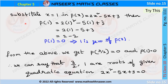Now we substitute x equal to 1 in p of x equal to 2x² minus 5x plus 3. Then it can be written as p of 1 equal to 2 times 1² minus 5 times 1 plus 3. Here, 1² equals 1 and 5 into 1 is 5. So it can be written as 2 into 1 minus 5 plus 3, and minus 5 plus 3 is minus 2, and 2 into 1 is 2.